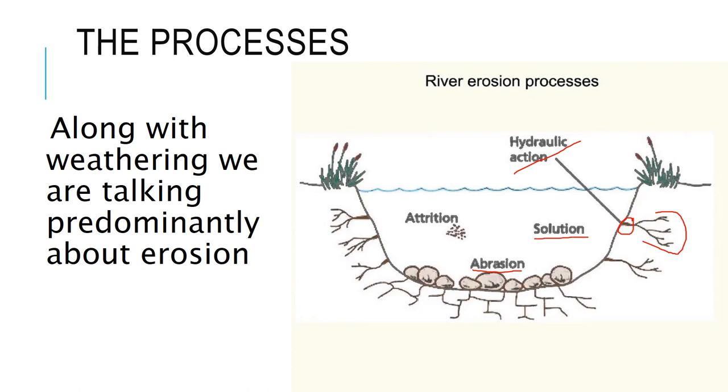Solution, floating in the middle of nowhere here, simply means the chemicals in the water eating away at the rocks and the riverbed itself. And attrition simply means the smaller rocks, smaller particles, getting picked up by the water and knocking into each other, and every time they do that they weaken and they get slightly smaller.